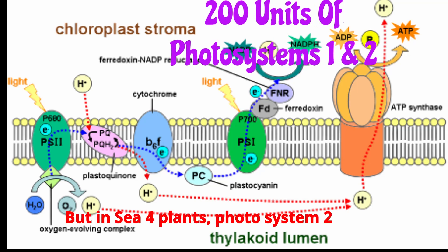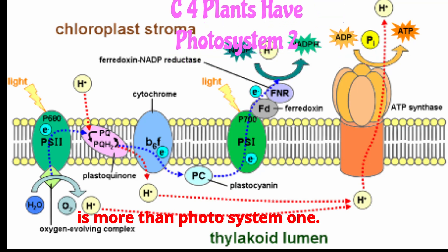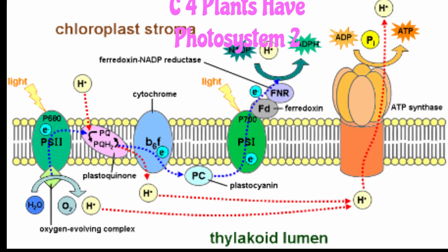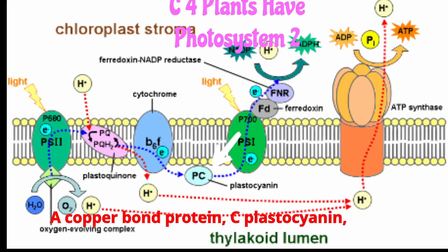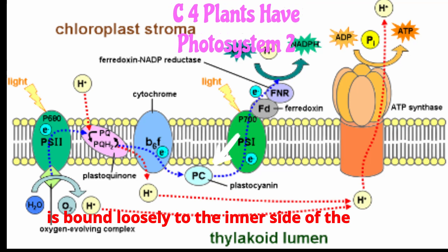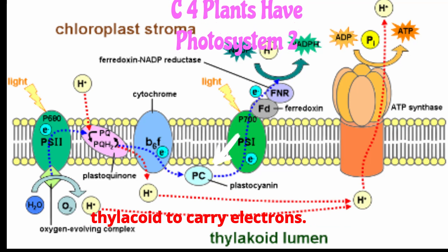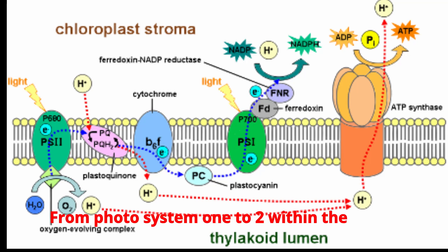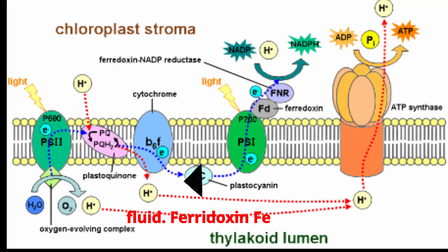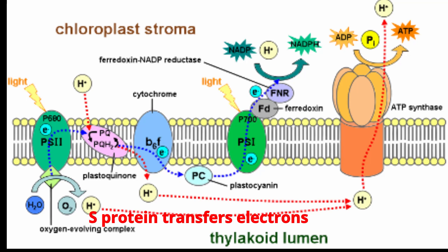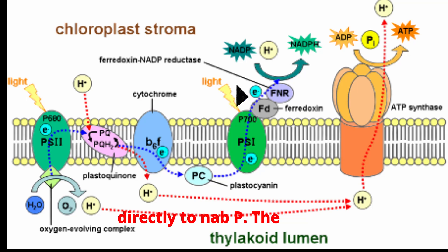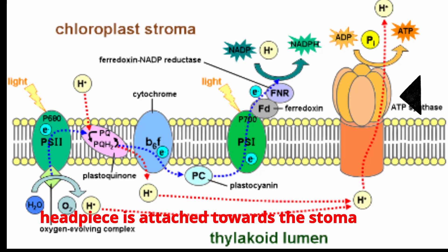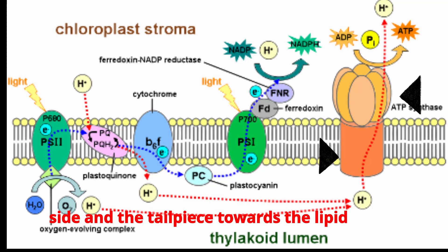In C4 plants, photosystem 2 is more abundant than photosystem 1. A copper-borne protein, plastocyanin, is bound loosely to the inner side of the thylakoid to carry electrons from photosystem 1 to 2 within the fluid. Ferredoxin, an Fe-S protein, transfers electrons directly to NADP. The headpiece is attached toward the stroma side and the tailpiece toward the lipid bilayer.